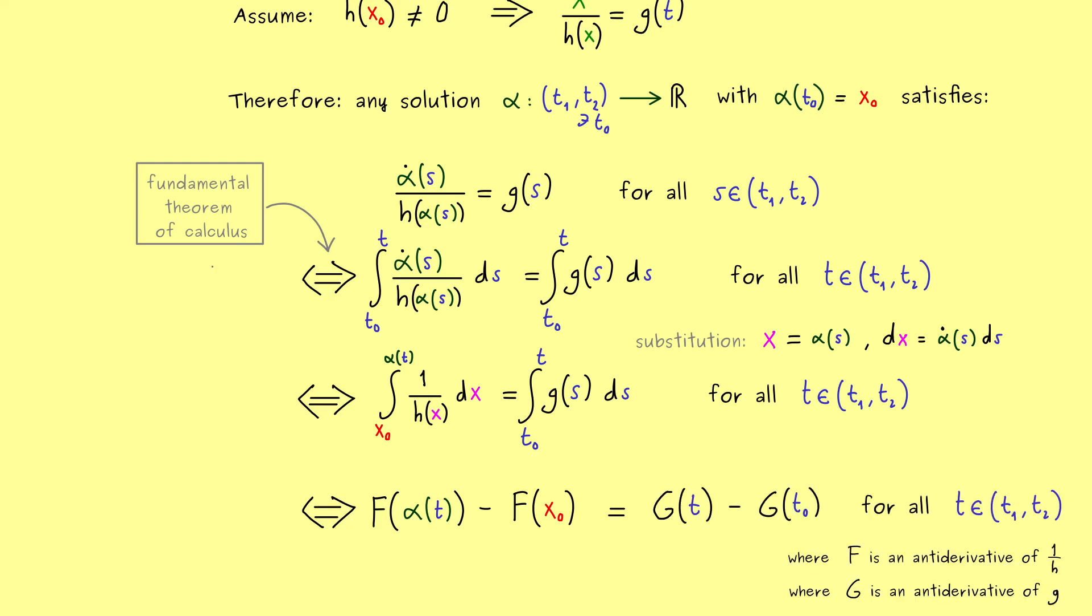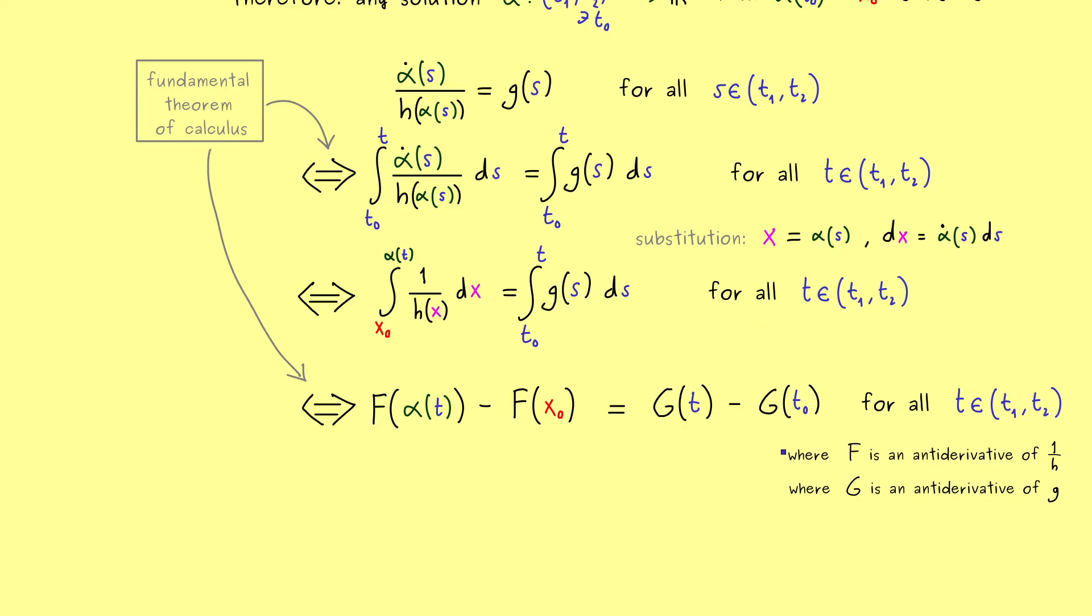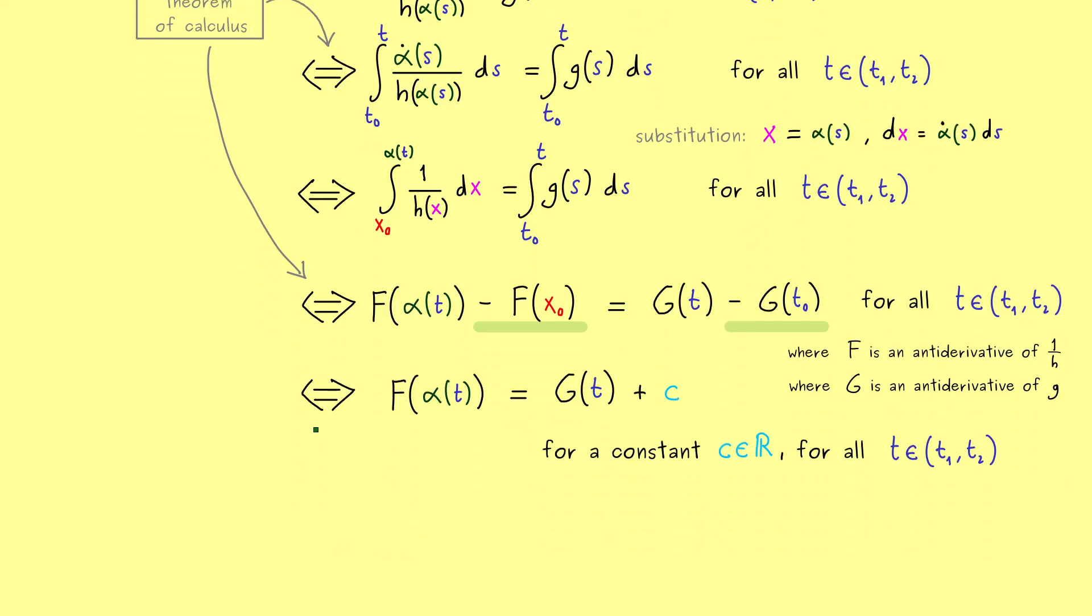On both sides we need antiderivatives to solve the thing. Let's use capital F for the antiderivative of 1 over h, so for the one on the left-hand side, and capital G for the one on the right-hand side. The fundamental theorem of calculus is at work again. It does not matter which antiderivative we choose because they only differ by an additive constant. We can put these two constants into a single one. In other words we simply write F equals G plus a constant c.